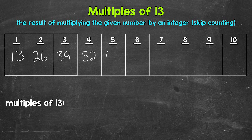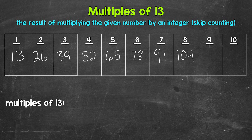Five times 13 is 65. Six times 13, 78. Seven times 13, 91. Eight times 13, 104. Nine times 13, 117. And 10 times 13 gives us 130. Those are the first 10 multiples of 13.